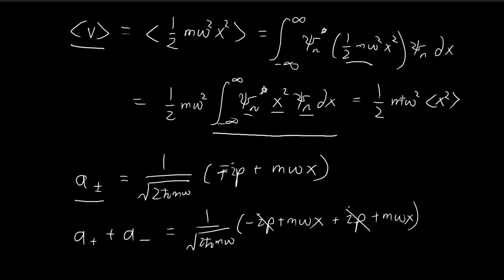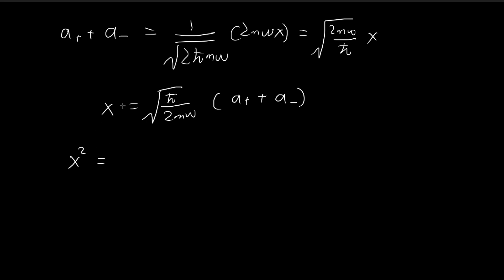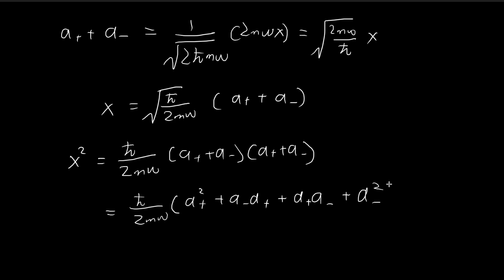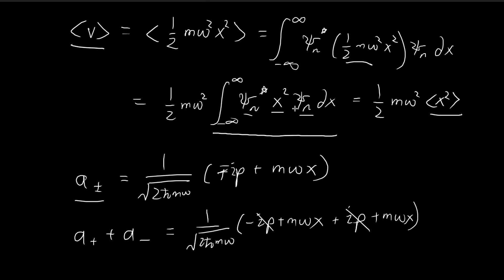Since we're interested in the expected value of x squared, x squared is just applying this operator two times. The constants come together and the square root disappears. So applying x squared to a function is equivalent to applying (ħ / 2mω)(a+ + a-)² to a function. Expanding the brackets gives four terms: a+ squared, a-a+, a+a-, and a- squared.